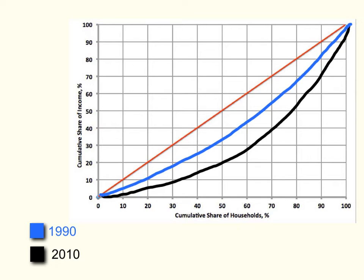Here we have two Lorenz curves showing a difference between time periods: 1990 in blue and 2010 in black. The Lorenz curve can illustrate a change in income distribution over time. This graph shows that between 1990 and 2010, income inequality increased — the black Lorenz curve is further from the line of equality. For instance, the bottom 50% in 2010 received about 20% of income, whereas 20 years earlier they were getting about 35%.